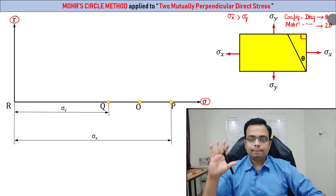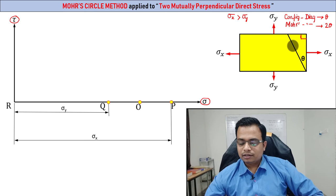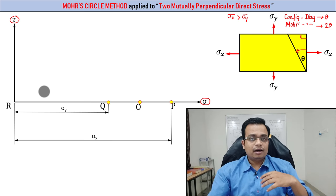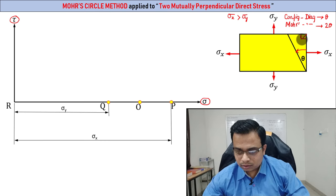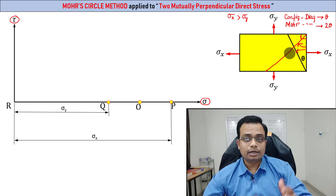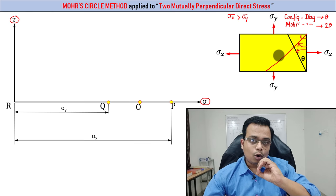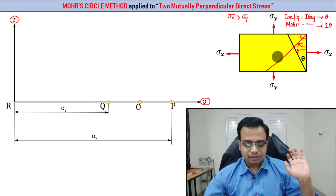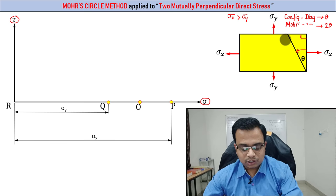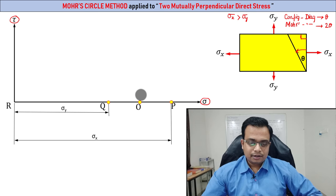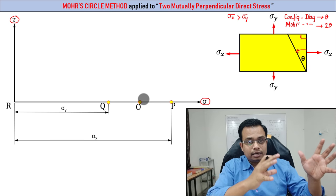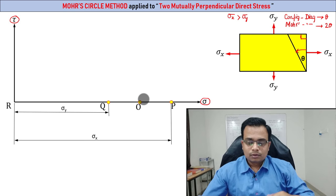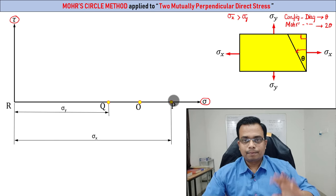The oblique plane you set up makes an angle theta in the anti-clockwise sense with the vertical. It could also make a clockwise angle — both cases will be worked out. So any angle theta in the configuration diagram becomes 2-theta in the Mohr's Circle. With respect to point P, the angle made in the Mohr's Circle diagram is going to be 2-theta.